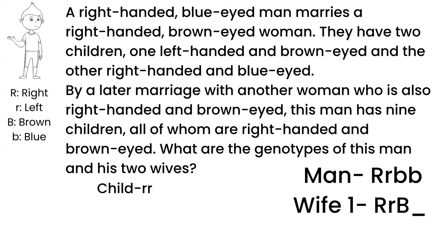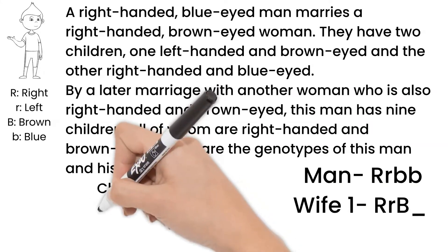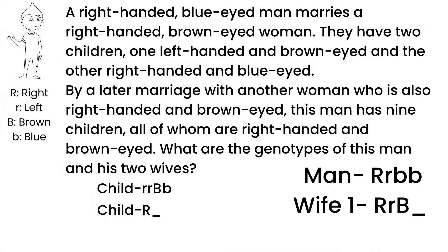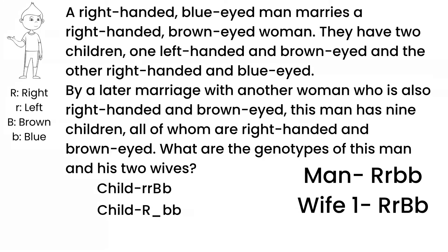This child has brown eyes, which he would have gotten from his mom. Even though the question doesn't ask for the kids' genotypes, this one must be heterozygous, as their dad only had recessive alleles to give. Their other child is right-handed, so has a dominant allele, and we cannot determine if their other allele is dominant or recessive from the information given. This is why the question does not ask for the kids' genotypes. This child has blue eyes, which is homozygous recessive. This helps us know the first wife is heterozygous for eye color.